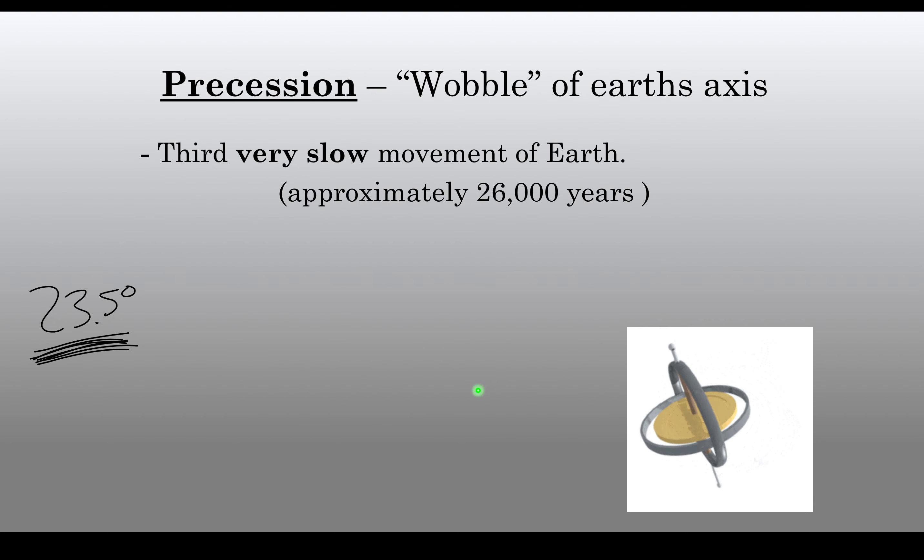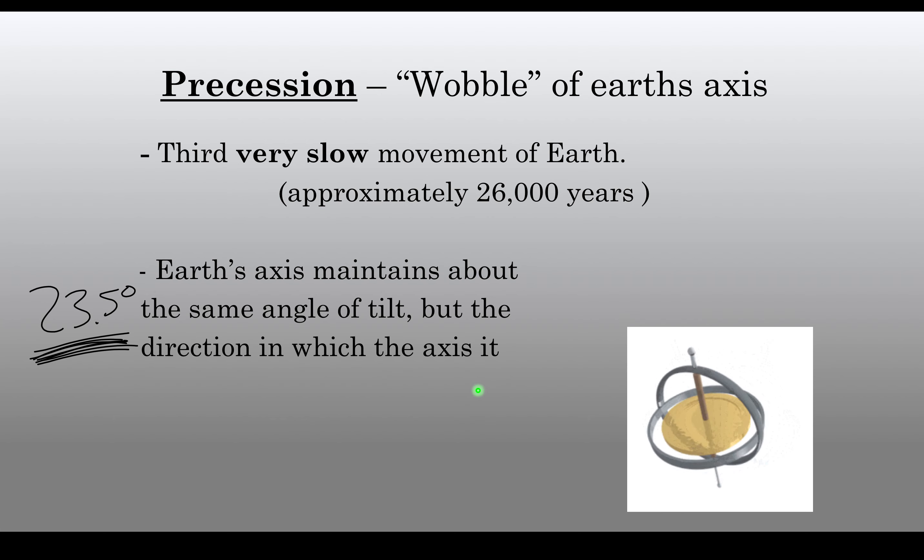As I mentioned, the precession is a small wobble of Earth. We still remain on our tilt of 23.5 degrees, but sometimes, if you notice here, it's not exactly 23.5 degrees, but it is very close.